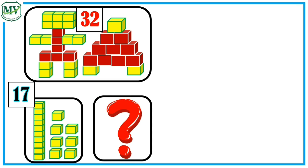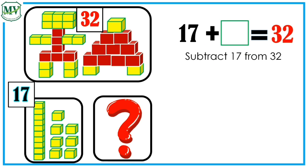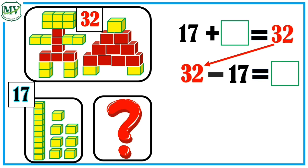Now, let's apply what we have learned. The given numbers are 17 and 32, and the unknown is the total number of red cubes. So, the number sentence is 17 plus blank equals 32. To find out the number of red cubes, subtract 17 from 32. So, 32 minus 17 equals 15.